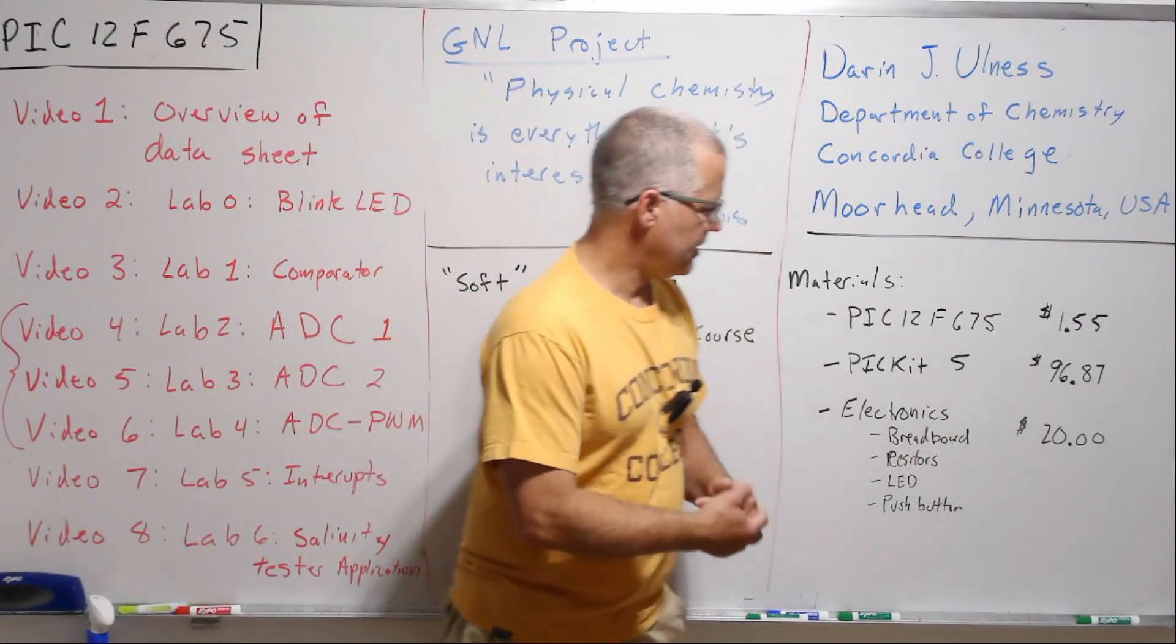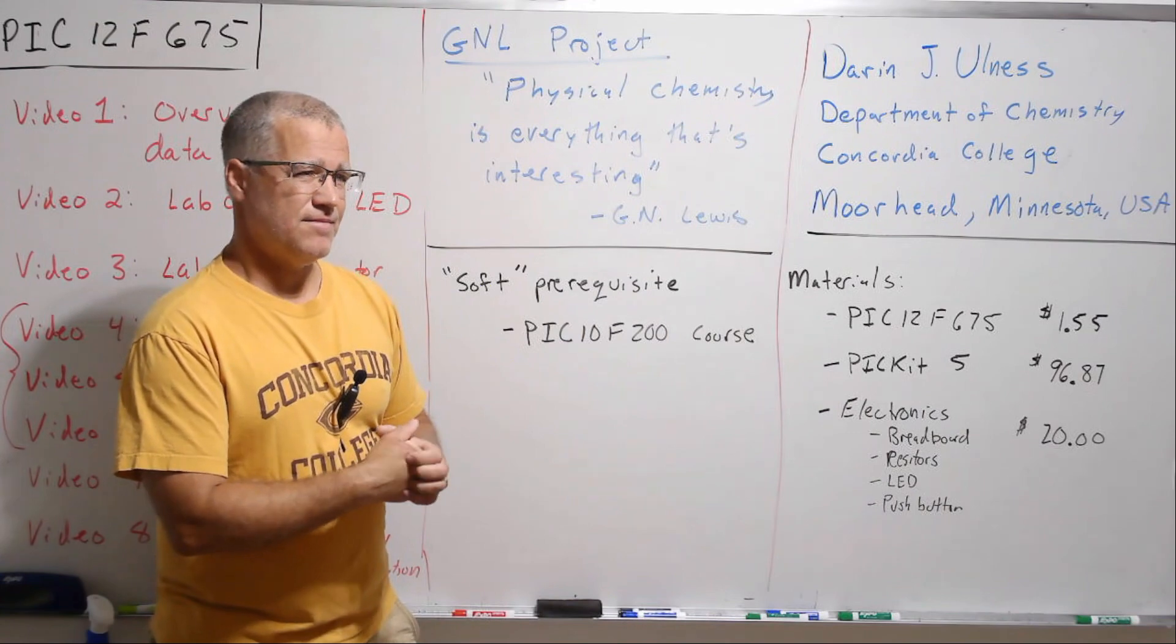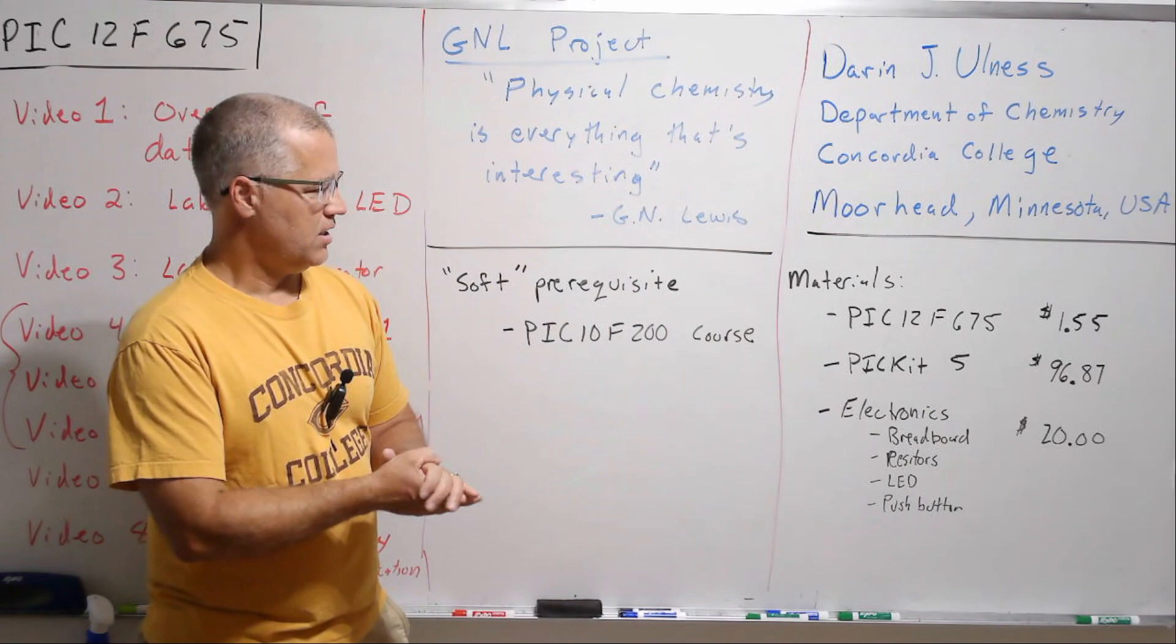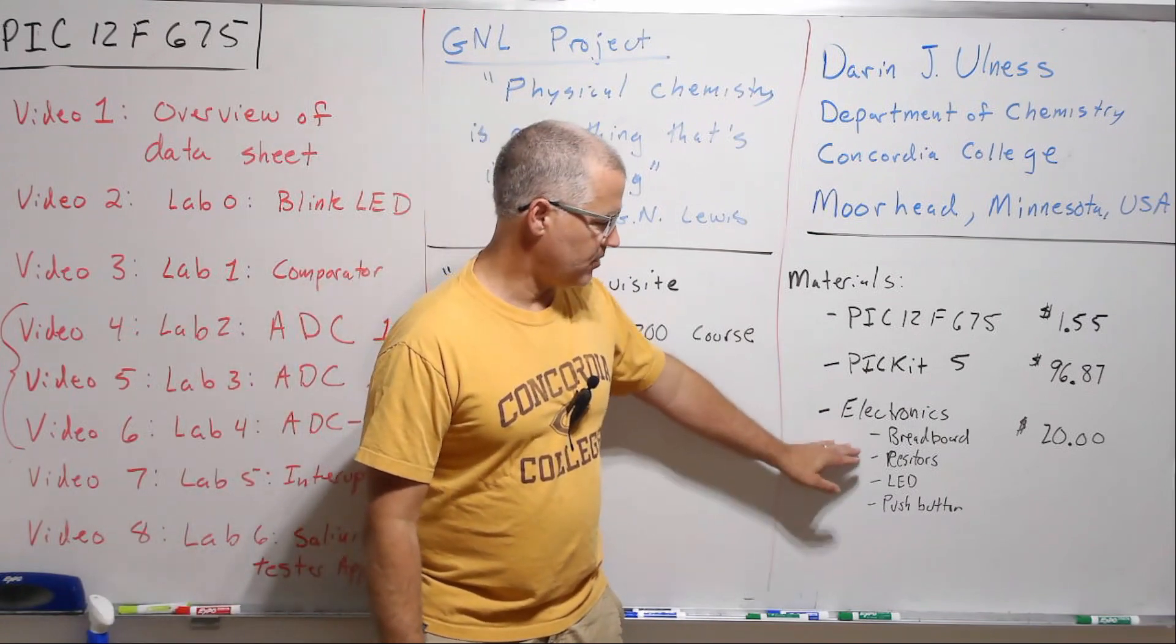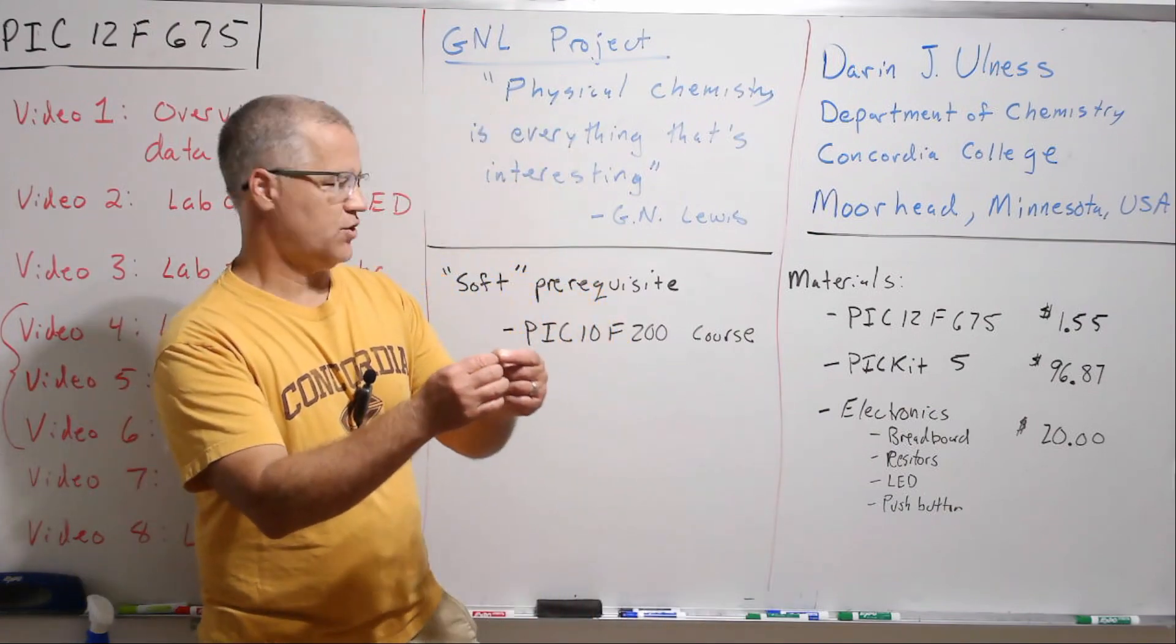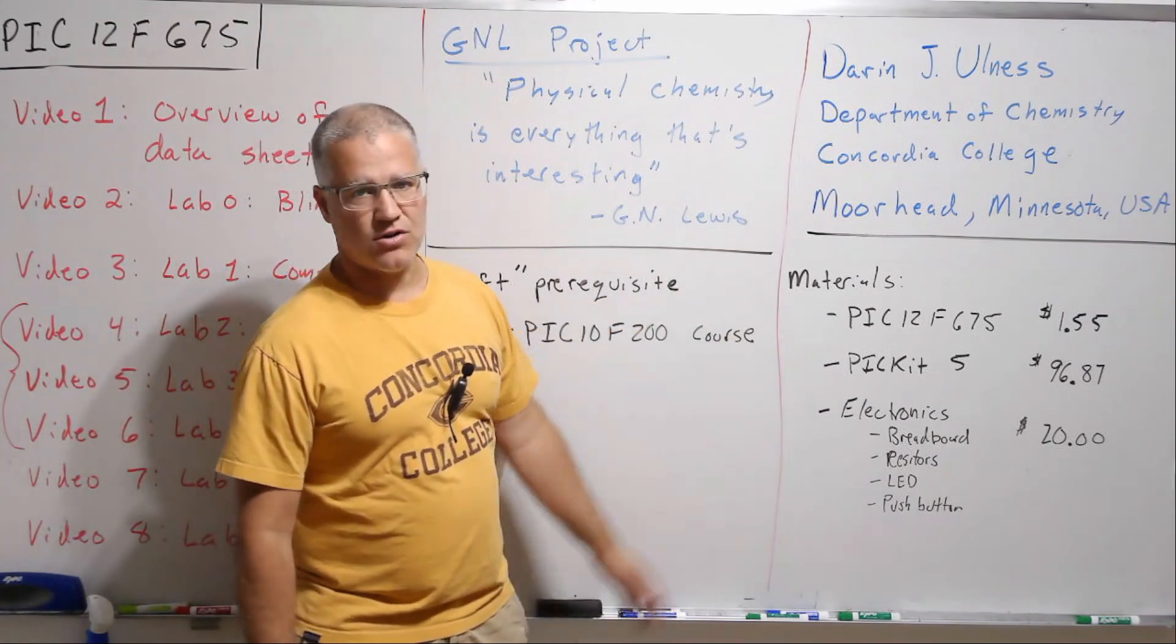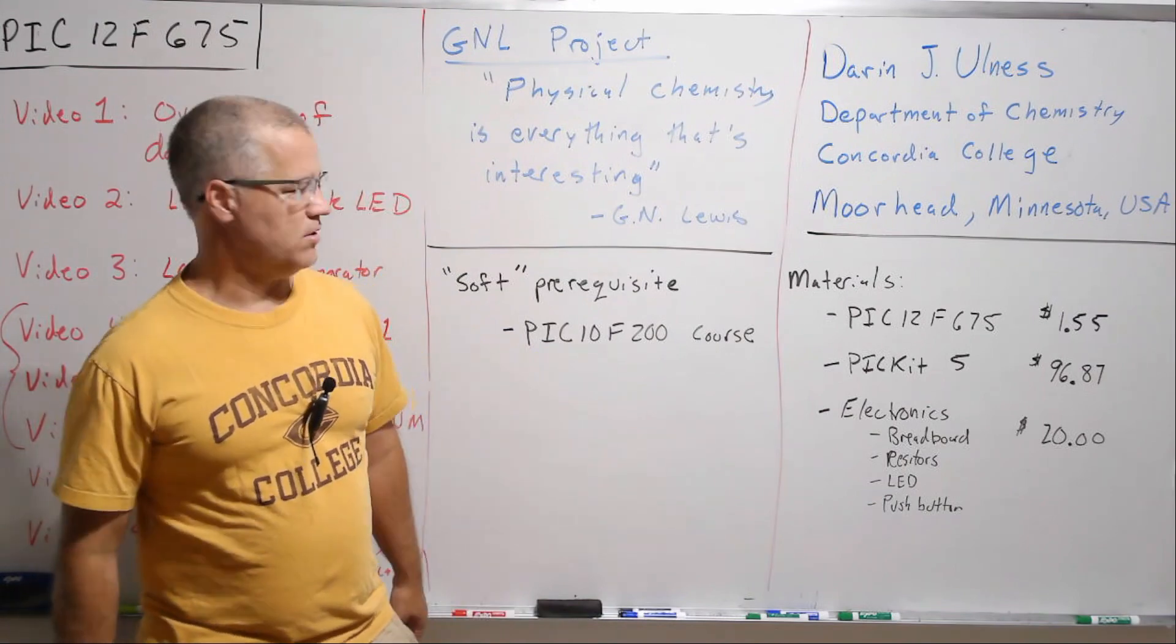The big cost item is the PICkit 5. I think you could use a PICkit 4. I'm not sure if the current version of MPLAB will allow for a PICkit 3, but if so, you can maybe find some of those on eBay a little bit cheaper. Although I'm always doing everything with the PICkit 5. And then very minimal electronics as we said: just a breadboard, a couple of resistors, LED, and a push button. You wouldn't even really need the push button; you could just push two wires together. So I'd say something less than 20 bucks for that. If you are at Concordia and you want to do this and you want to borrow some of this, just come by and see me. The department can put together a little lab packet for you.